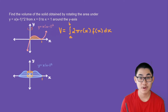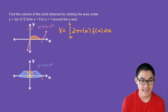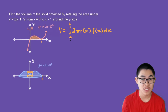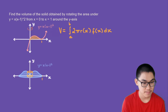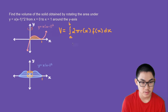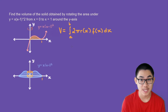Step number one, we want to find a and b. So a will always be the start, which is in the middle, and b is at the end. So a is equal to zero and b is equal to one.